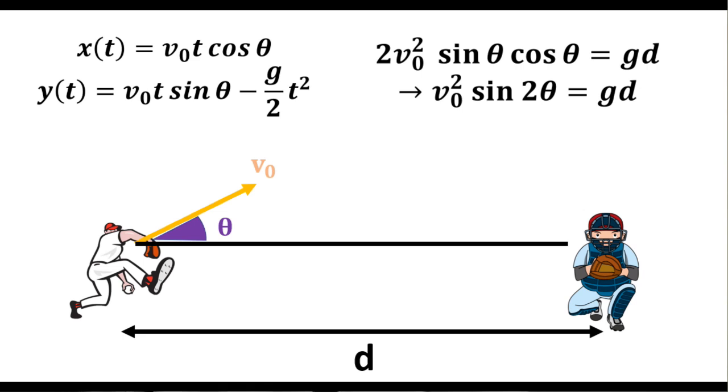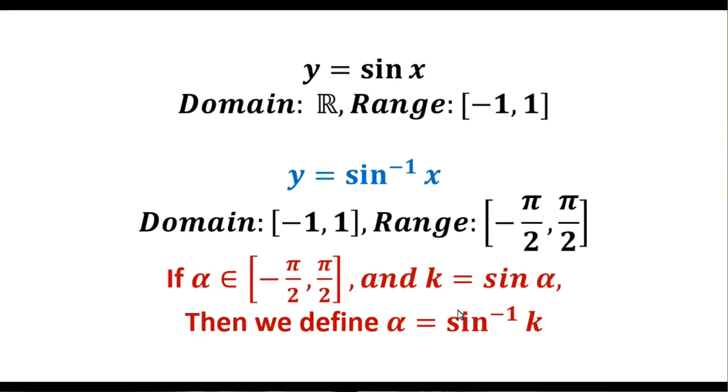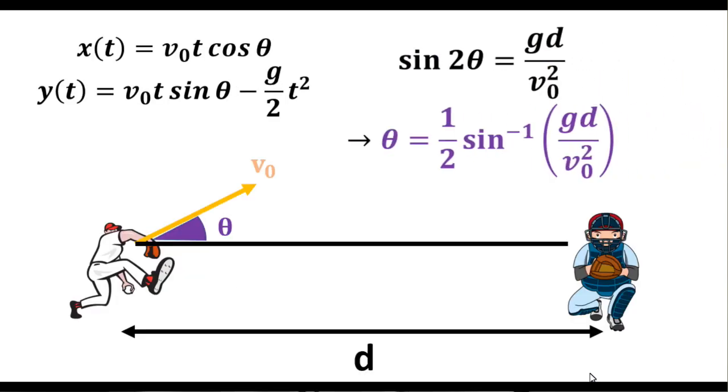To solve for theta, we have to include the inverse trig functions. In this case, the inverse sine, denoted as inverse sine of x. It outputs the only angle alpha from negative pi over 2 to pi over 2 such that sine of alpha equals x. Taking the inverse sine of both sides, we get that theta is 1 half times the inverse sine of gd over v0 squared. And we have the formula that I showed you in the beginning.